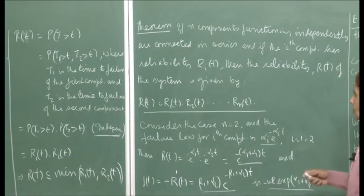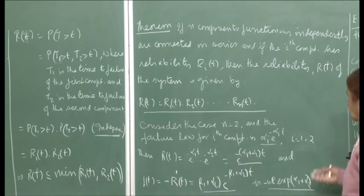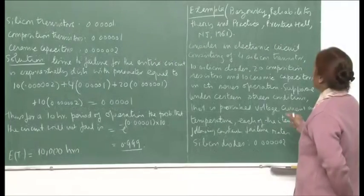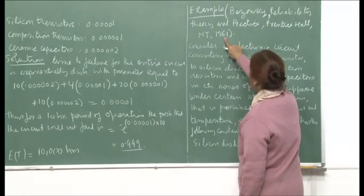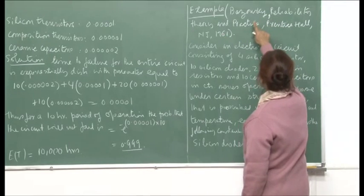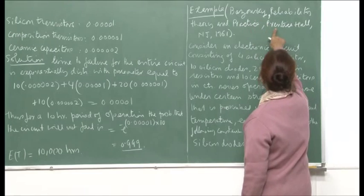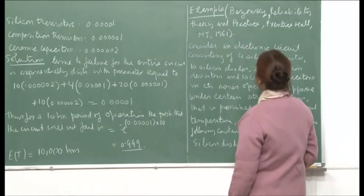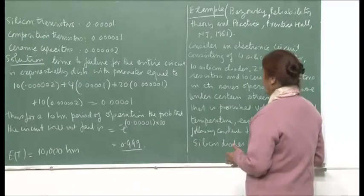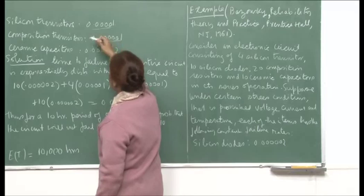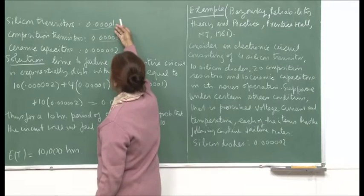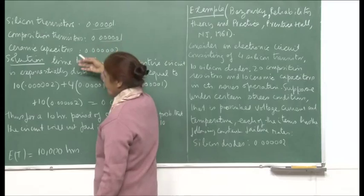We can look at some more examples and then another kind of system when components are arranged in parallel. I have taken this example from a book published in 1961 — Bazovsky's Reliability Theory and Practice, Prentice Hall. The book may not be available now, but I chose this example because figures such as failure rates for silicon transistors and composition transistors are not easily available elsewhere.